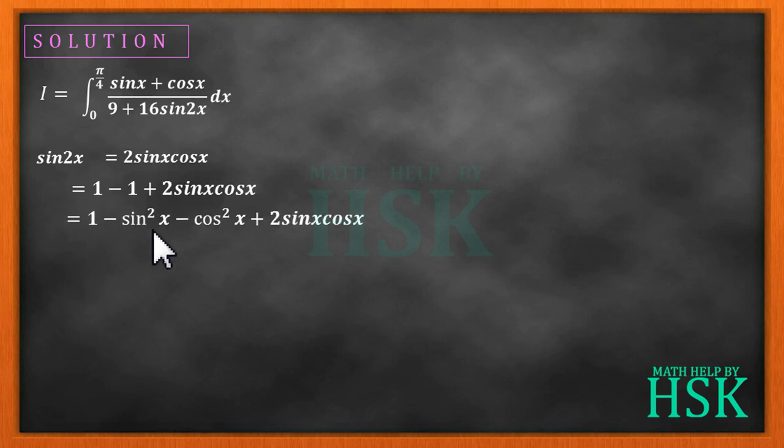1 minus sine square x minus cos square x plus 2 into sine x into cos x. Further we can write 1 minus in bracket sine square x plus cos square x minus 2 sine x into cos x, or 1 minus sine x minus cos x whole square.